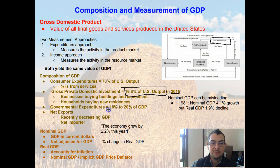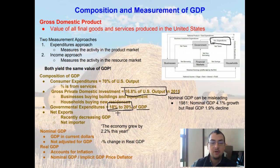Government expenditures on average make up anywhere from 18 to 20% of GDP. As much as the government can get a bad rap for running budget deficits and spending more than it takes in, it does make up a large portion of GDP. Government expenditures alone account for one-fifth of all final goods and services being bought in the United States, which is quite a significant contribution.